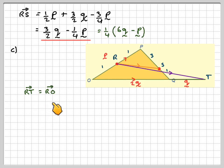So RT is equal to RO plus OT. So that's going to be equal to minus a half p, because you're going against the arrow, because the arrow is that way, plus 3 lots of q, which we're going to write 3q minus a half p. Now, if we take out half as a common vector, we will be left with 6q minus p.